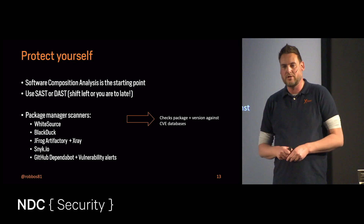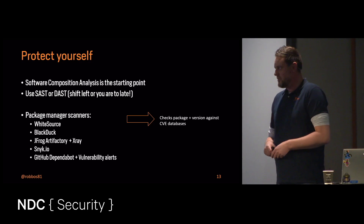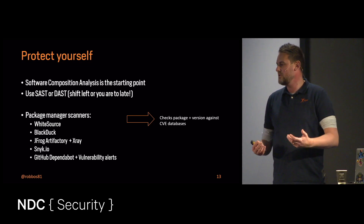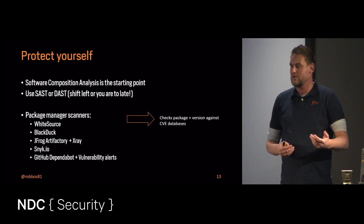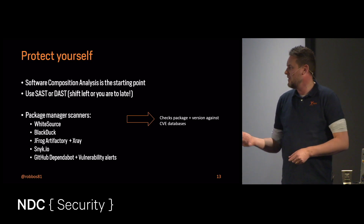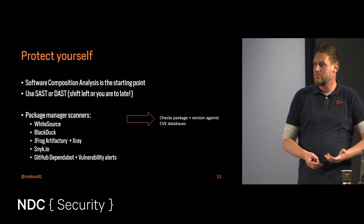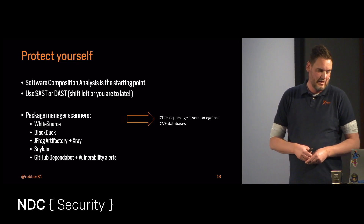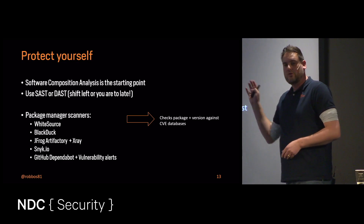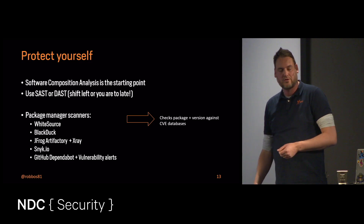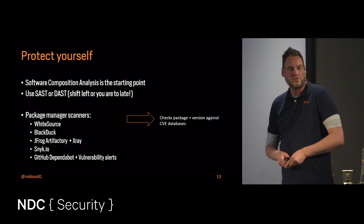Once you know that list of packages and versions, you can match them against a known vulnerability database that says: this version of this package has an issue, upgrade to a newer non-vulnerable version. That's usually where SAST or DAST comes in. Static Application Security Testing looks at your source code without executing it and finds vulnerability patterns. It can go through your manifest files — in the case of npm, your package.json — and figure out which components make up your software. From DevOps principles, we always say shift left: do that as early as possible.